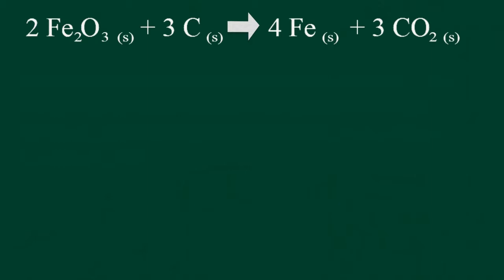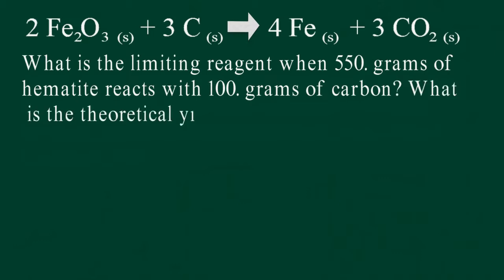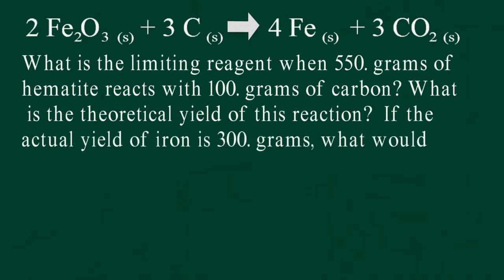The problem we were asked to solve is what is the limiting reagent when 550 grams of hematite react with 100 grams of carbon? What is the maximum amount of iron that could be produced from this reaction? And what is the percent yield if the actual mass of iron produced is 300 grams?